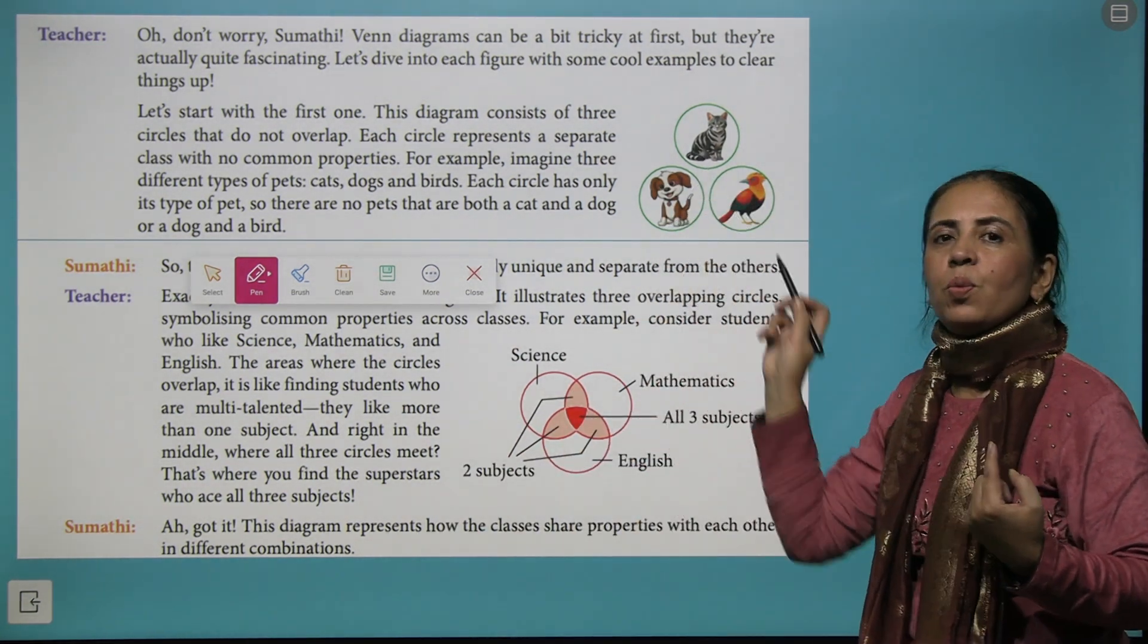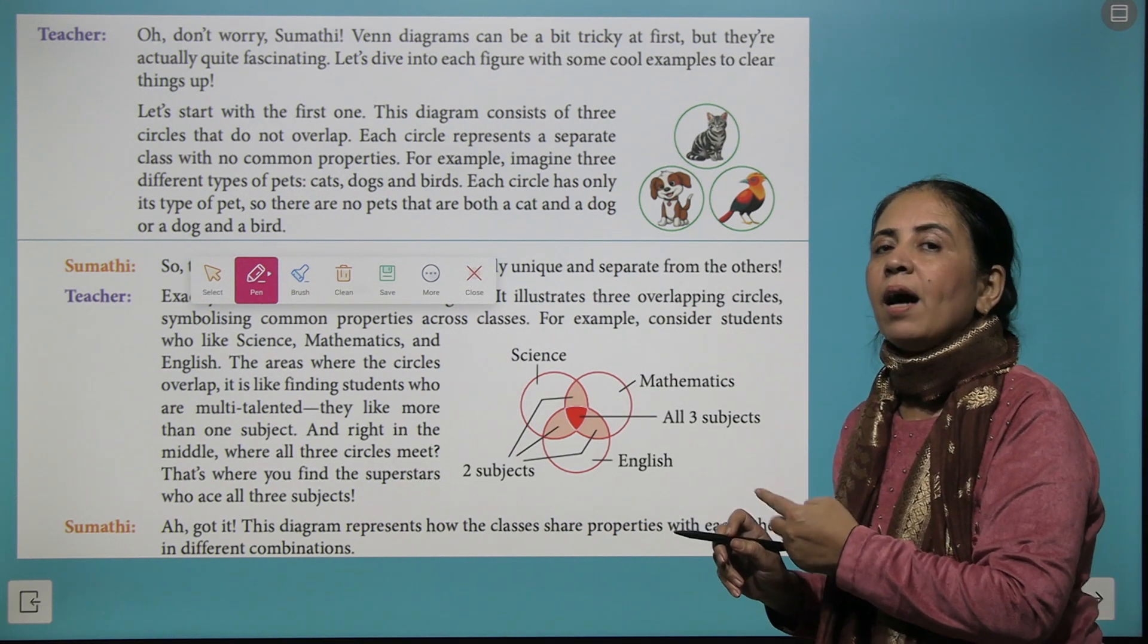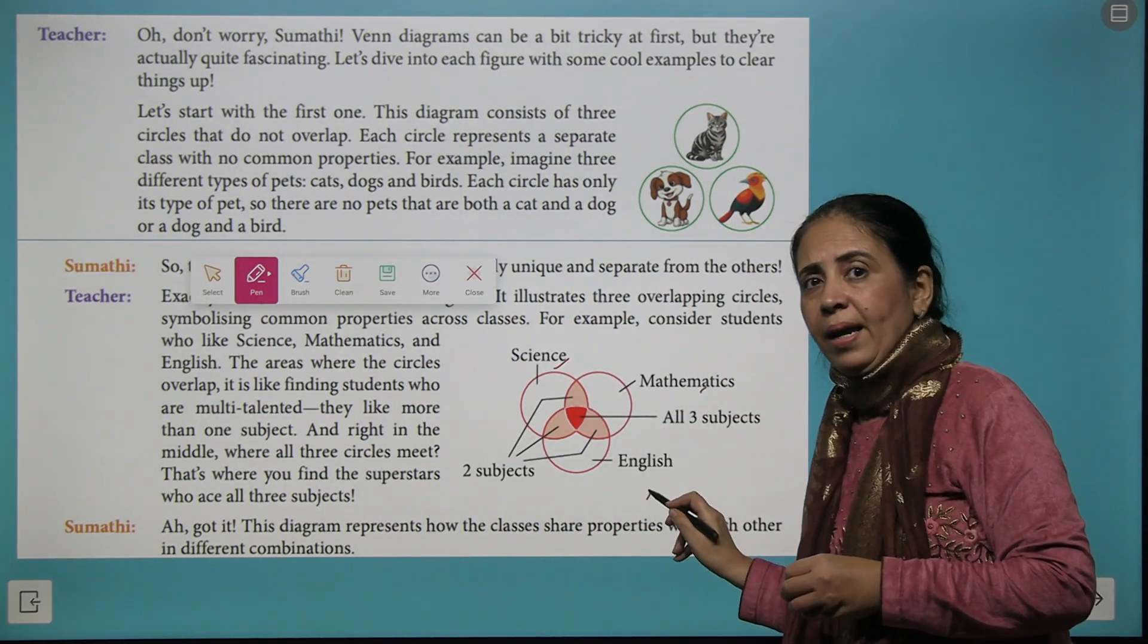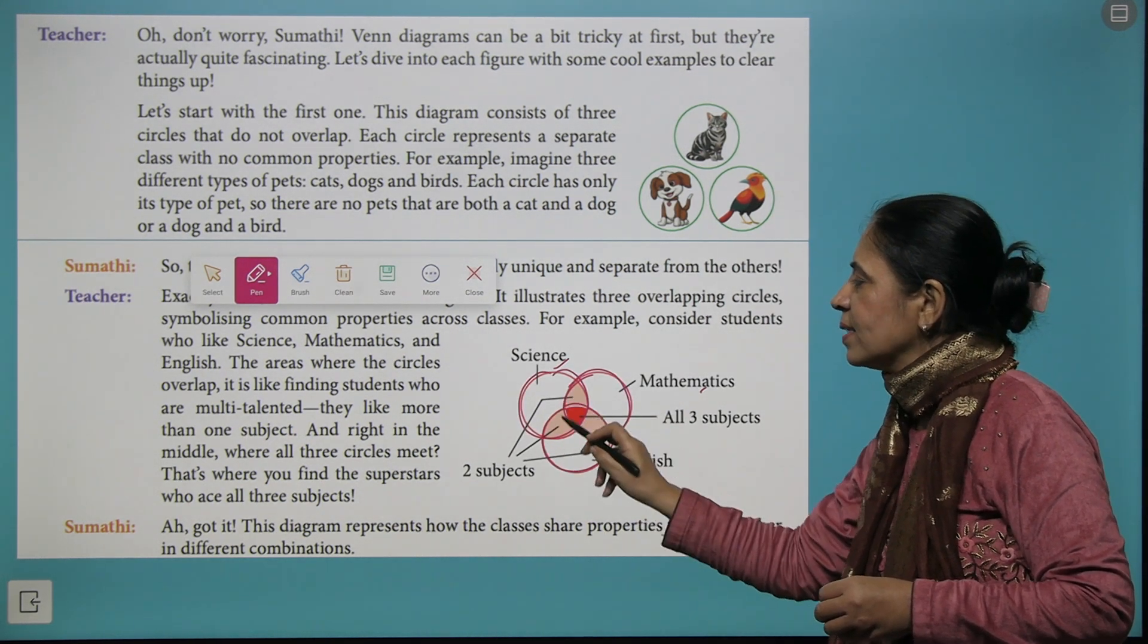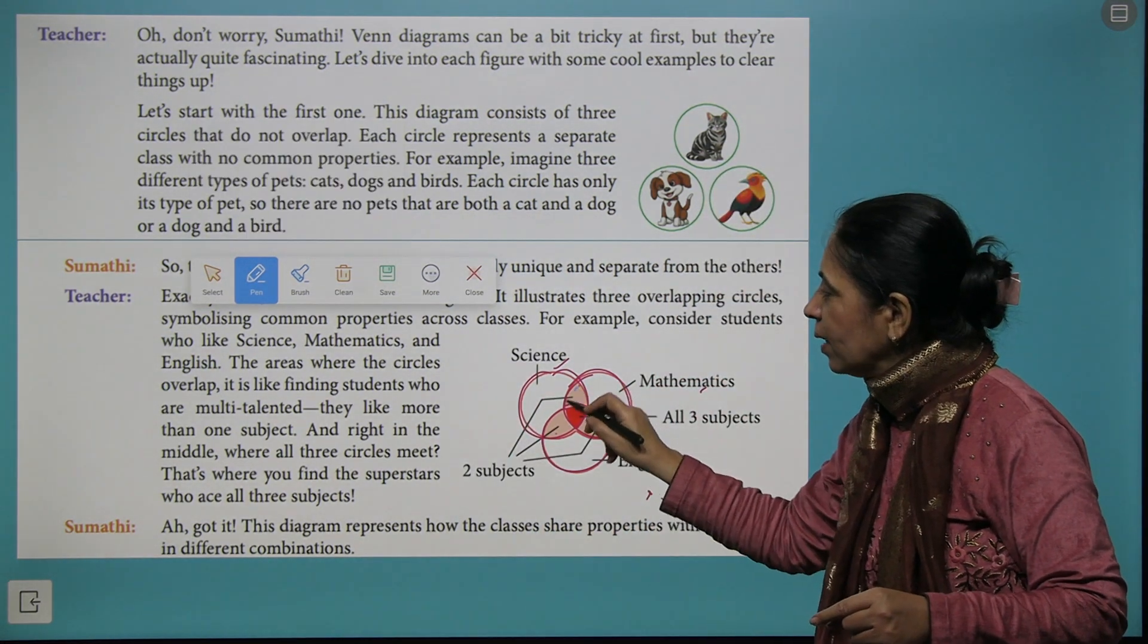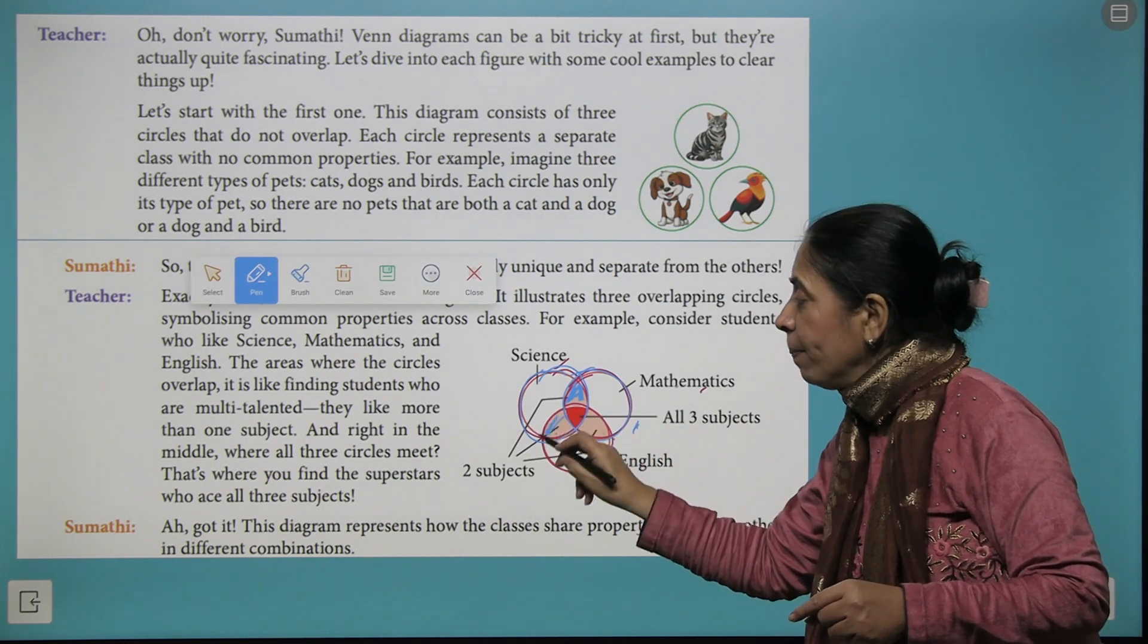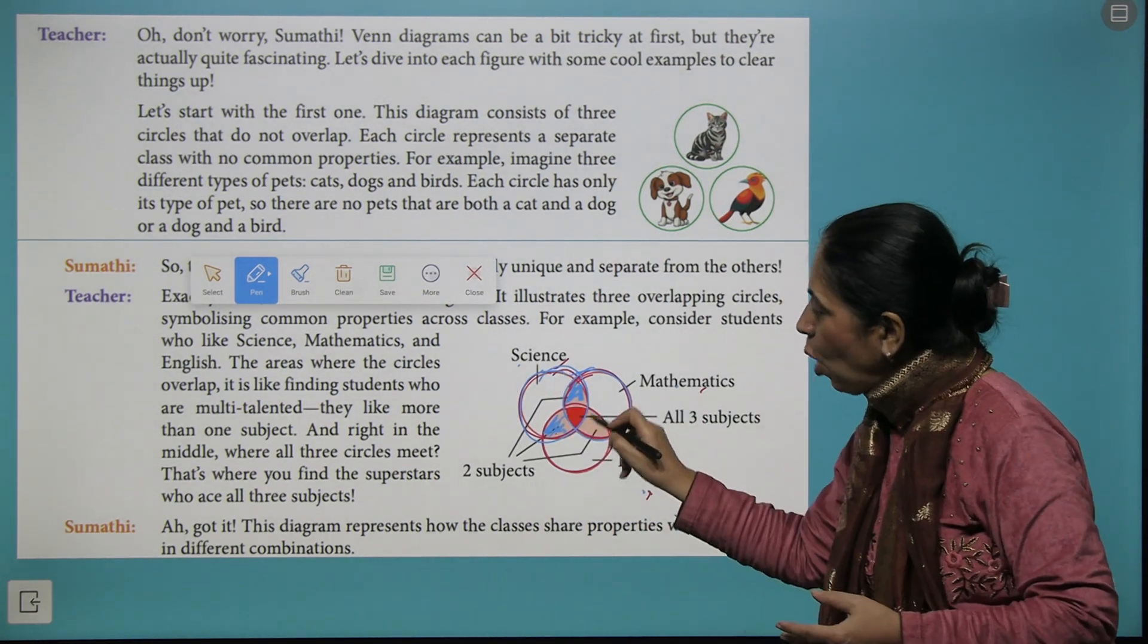I have brought another example in which we have taken feedback from different students and these students are telling their favorite subjects among Science, Mathematics, and English. If you observe carefully, we have these circles which are intersecting at certain points. Now what this intersection actually means? When I look at the first combination of intersection, this shows that there are few children who like both Science and Mathematics. This common part indicates that we have few children who like Science and English, and this common part indicates children who like Mathematics and English.